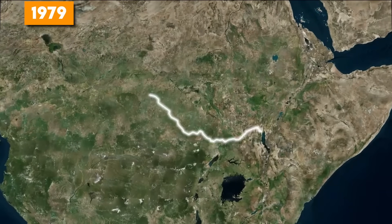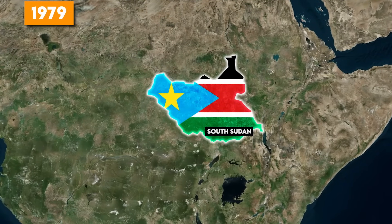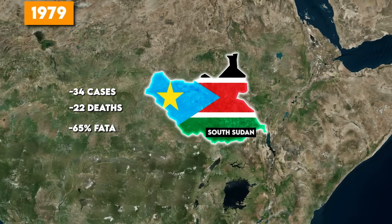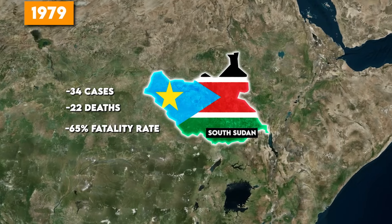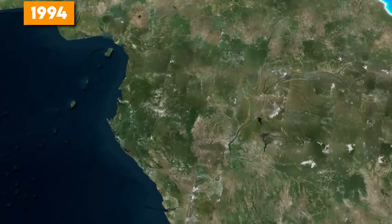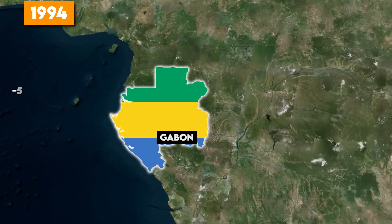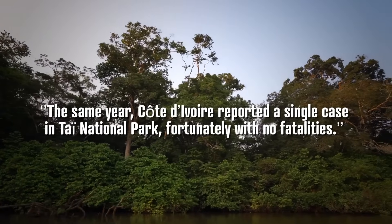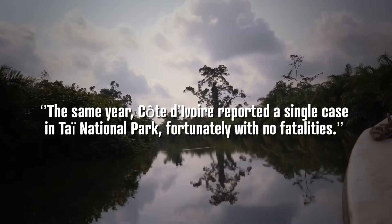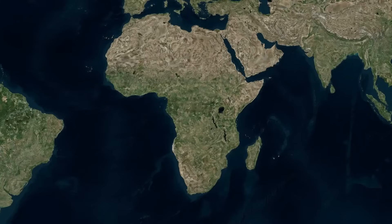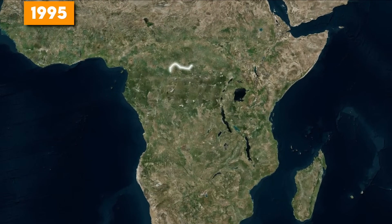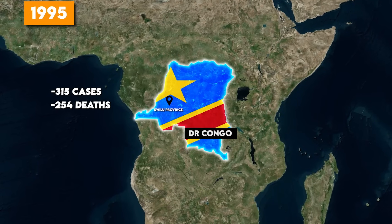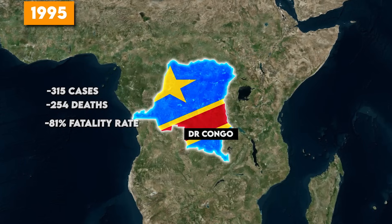In 1979, South Sudan experienced another outbreak in the Western Equatoria state, where 34 people were infected and 22 succumbed to the virus — a 65% fatality rate. After a period of relative quiet, Ebola reappeared in 1994 in Gabon, resulting in 51 cases and 31 deaths, with a fatality rate of 60%. That same year, Côte d'Ivoire reported a single case in the Taï National Forest, fortunately with no fatalities. 1995 brought a significant outbreak to the DRC in Quilu Province, with 315 cases and 254 deaths — an 81% fatality rate.